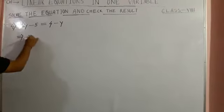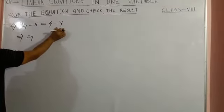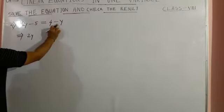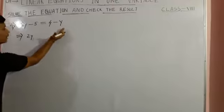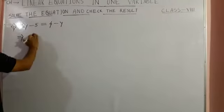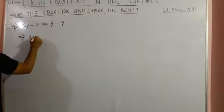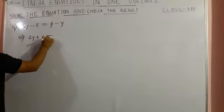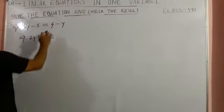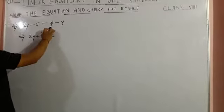This is 2y on the left hand side. Right hand side variable term we have y, and y is negative. We want to transpose this y to the left hand side, so the sign will change - it is positive now.